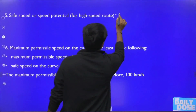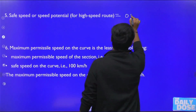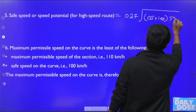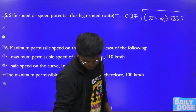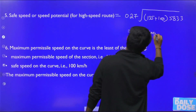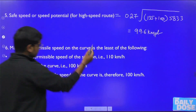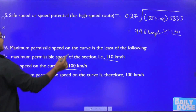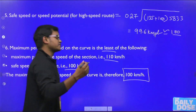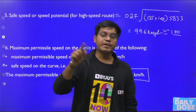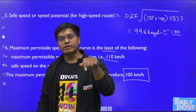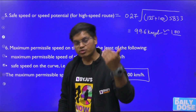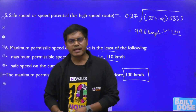Using the Indian Railway formula with actual cant = 135 mm, cant deficiency = 100 mm, and R = 583.3 m: V = 0.27 × √[(135 + 100) × 583.3] = 99.6 km/h, approximately 100 km/h. The maximum permissible speed is the least of the sanctioned speed (110 km/h) and the calculated speed (100 km/h), so the answer is 100 km/h. This covers both question types you may encounter in the GATE examination.